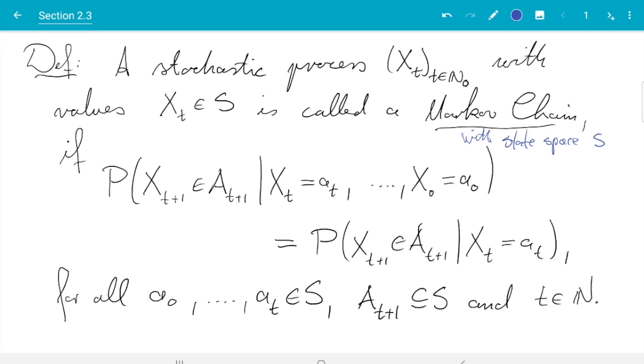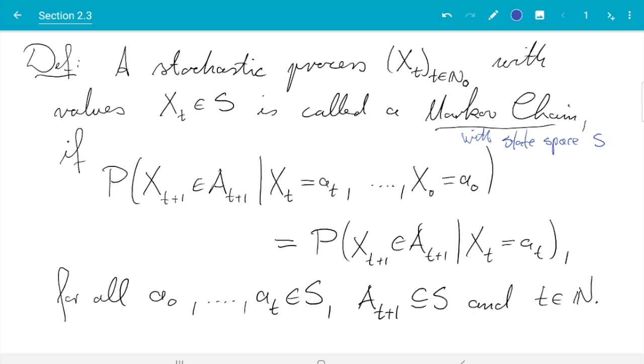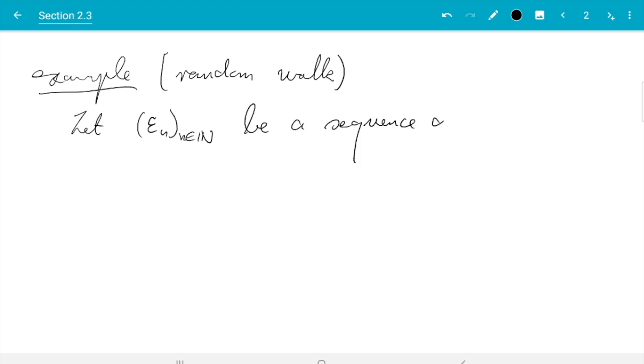That's the definition we have to understand in this section. The first thing I want to do is give an example. The process I want to consider here is called the random walk, and this is the Markov chain which is made up as the sum of individual independent random variables.